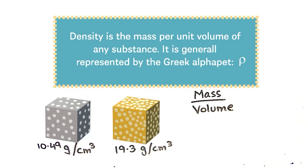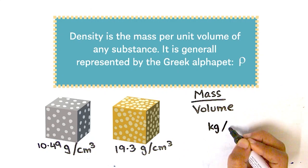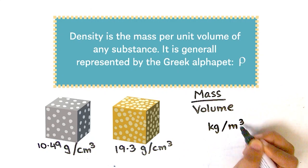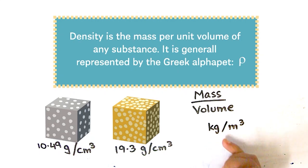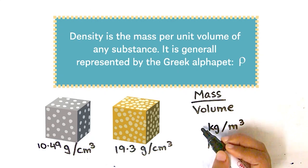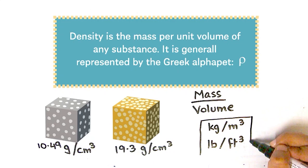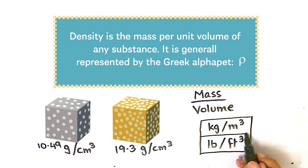Our units here are grams per centimeter cube. But we can also express density in other unit systems — for example, kilograms per meter cube, or pounds per feet cube. These are some common units of density.